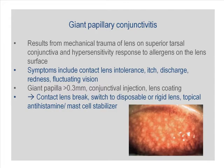Giant papillary conjunctivitis results from mechanical trauma of the lens on the superior tarsal conjunctiva and a hypersensitivity response to allergens on the lens surface. Symptoms include contact lens intolerance, itch, discharge, redness, and fluctuating vision. Each giant papilla is more than 0.3 millimeters in size, and there is conjunctival injection and lens coating. Treatment includes a contact lens break, switching to disposable or rigid lenses, and topical antihistamine or mast cell stabilizers.